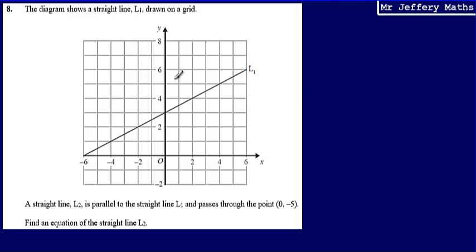This is question 8. Here we're told the diagram shows a straight line L1 drawn on a grid, and we're told that a straight line L2 is parallel to the straight line L1 and passes through the point 0, negative 5. We're asked to find an equation of the straight line L2.